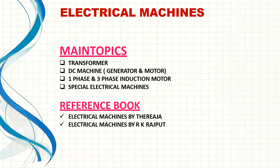Electrical Machines is a very important core subject. Start with transformers — single-phase, three-phase, and auto-transformers. Key topics: transformer principle, EMF equation, load and no-load conditions, transformer losses, efficiency, and voltage regulation. DC Machines cover generators and motors — EMF equation, types, and speed characteristics. AC motors include synchronous motors and induction motors — single phase and three phase. Synchronous machines cover alternators and synchronous motors, plus special electrical machines.